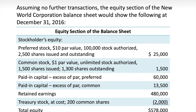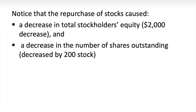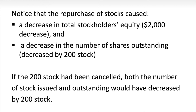Summarizing where we are: after booking all transactions, the equity section of the balance sheet shows the repurchase of stock caused a $2,000 decrease in total stockholders' equity and a decrease in shares outstanding by 200 shares. If the 200 shares had been canceled instead, both the number of shares issued and outstanding would have decreased by 200.